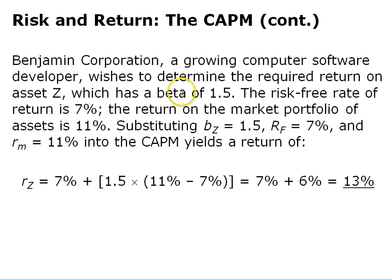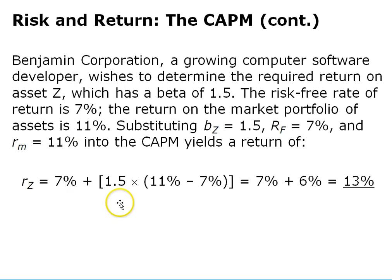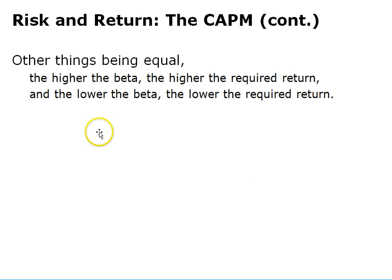For Benjamin Corporation, a growing computer software developer, we need to find the required rate of return on asset Z with a beta of 1.5, a risk-free rate of 7%, and a market return of 11%. Substituting the values: 1.5 times (11% minus 7%) equals 1.5 times 4%, which gives us 6%. Add back the risk-free rate of 7%, and we get a required return of 13%. All things being equal, the higher the beta, the higher the required rate of return, and since beta measures risk, that makes sense.